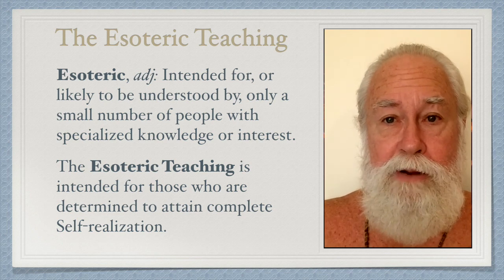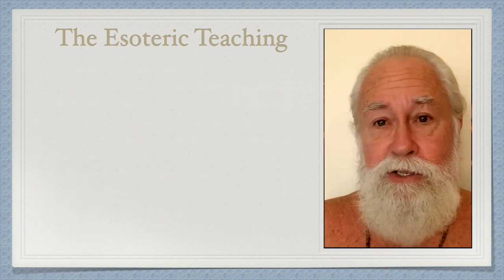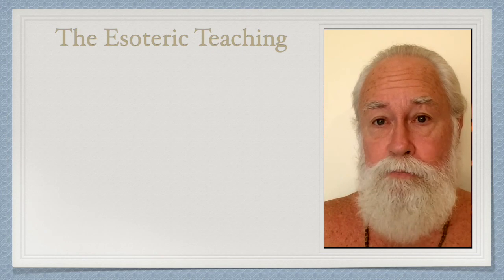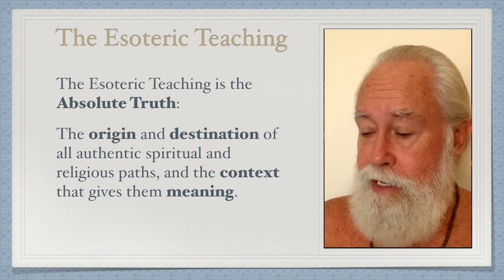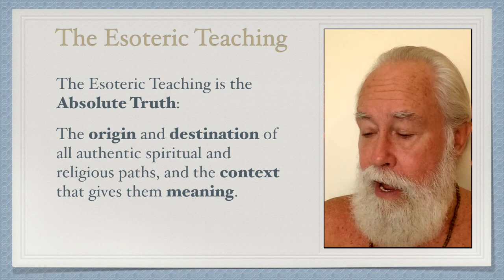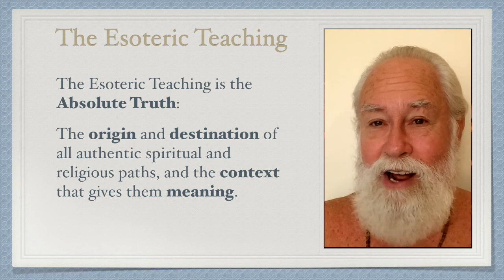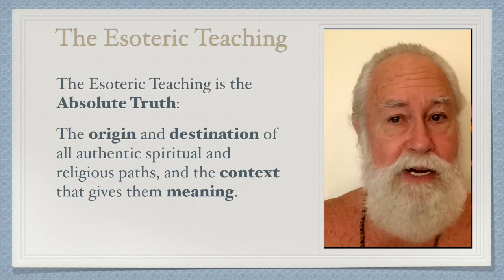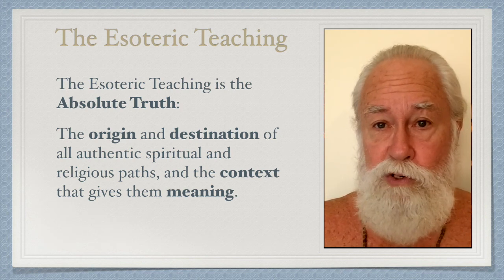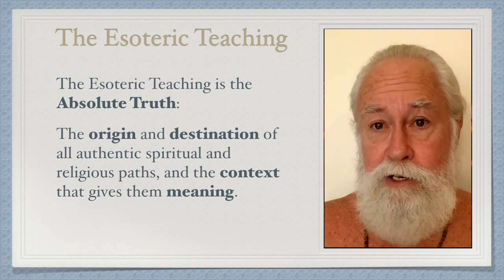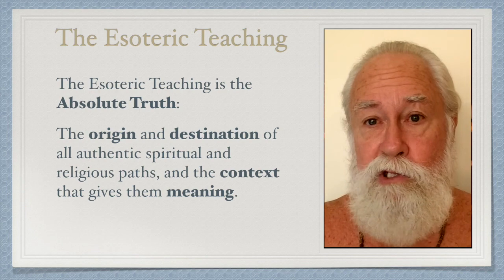It's like a Rosetta Stone — it can map the structure of all paths to all others. Why does the Esoteric Teaching have so much power? Because it's the absolute truth: the origin and destination of all authentic spiritual and religious paths, and the context that gives them meaning. Context can not only give meaning, it can expand the meaning already there, so the meaning inherent in a spiritual path, when put into the context of the Esoteric Teaching, is amplified — it becomes more meaningful, and hence more useful and more valuable.